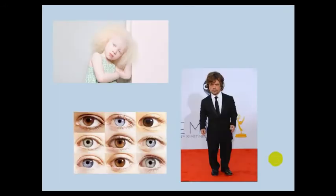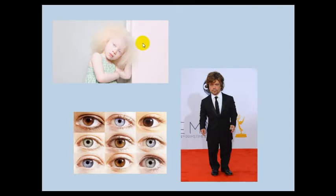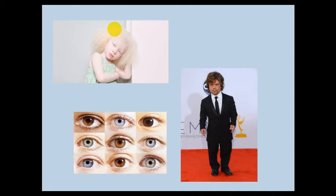An example of a genetic defect is albinism, where the individual has a defect in their melanin pigment — the skin pigment. It is either present or absent. A person lacking melanin pigment will tend to appear white. Albino people don't have melanin in their skin. The function of melanin is to provide an extra barrier against sunlight, meaning it filters the sunlight.